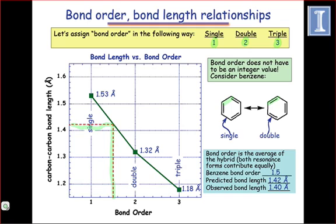we would predict a bond length of about 1.42 angstroms. This is only 0.02 angstroms away from the observed bond length of benzene 1.40 angstroms, for an error of only 1.4%.